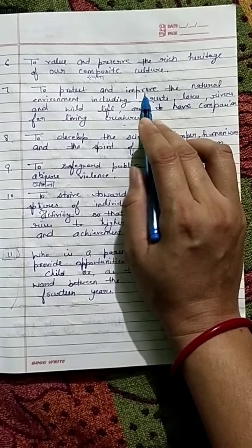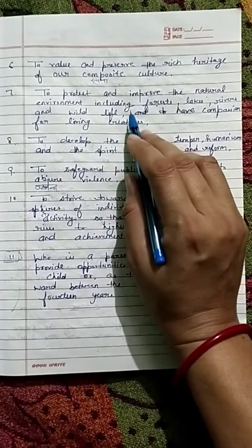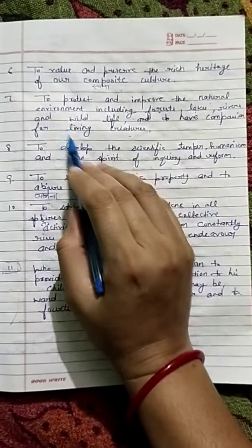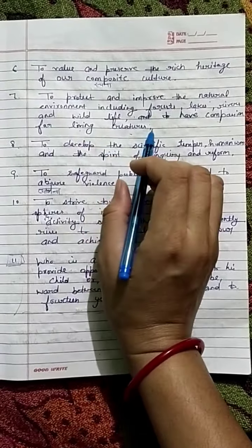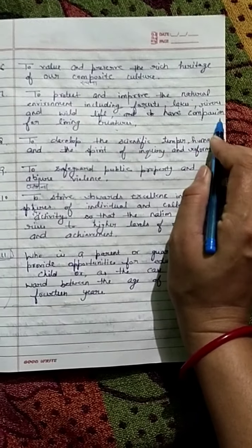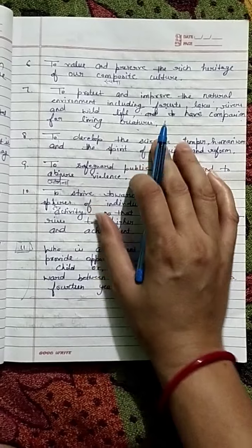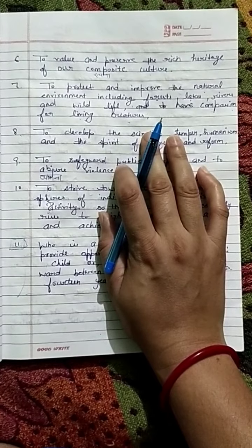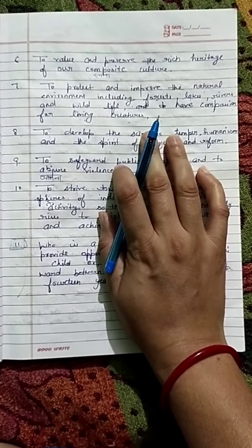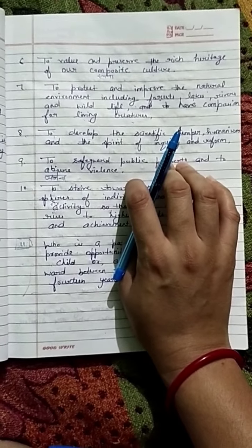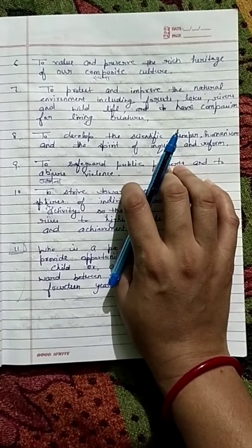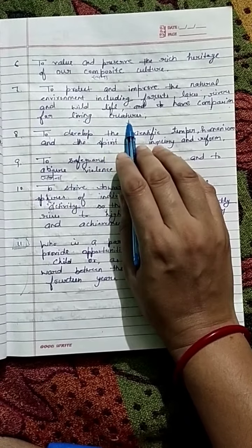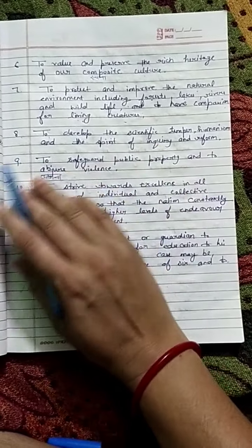आपको क्या करना है — सुरक्षित करना है, सुधार करना है अपनी प्राकृतिक परिवेश में। जैसे कि हमें अपने जंगलों में, अपनी नदियों में, अपनी झीलों में, हमारी wildlife और जानवरों की जिंदगी के साथ compassion करना है। जो living creatures हैं उन सभी को protect करना है क्योंकि ये सभी हमारी life का एक बहुत ही important हिस्सा हैं। एक responsible citizen होने के नाते ये आपका मौलिक कर्तव्य है कि आप natural environment को बनाए रखें।